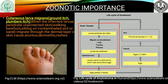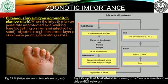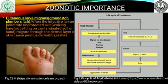As a zoonotic importance, ankylostomyosis causes cutaneous larva migrans or ground itch in human beings. When the infective stage larva penetrates unprotected skin, it migrates through the dermal layer of the skin and causes pruritic dermatitis and rashes. This most commonly occurs when walking barefoot or sitting on contaminated soil or sand.